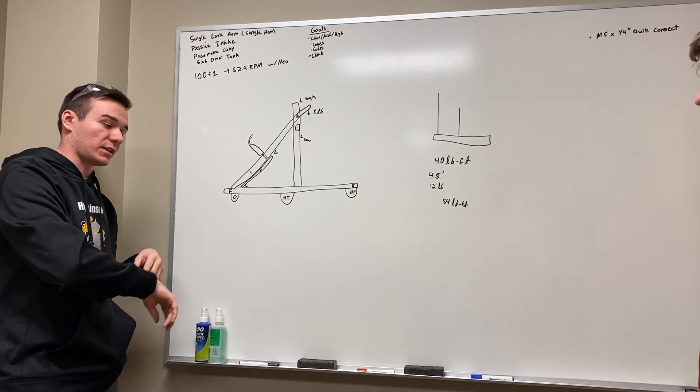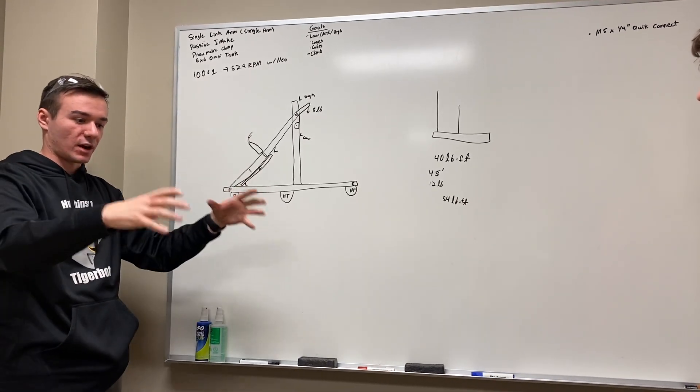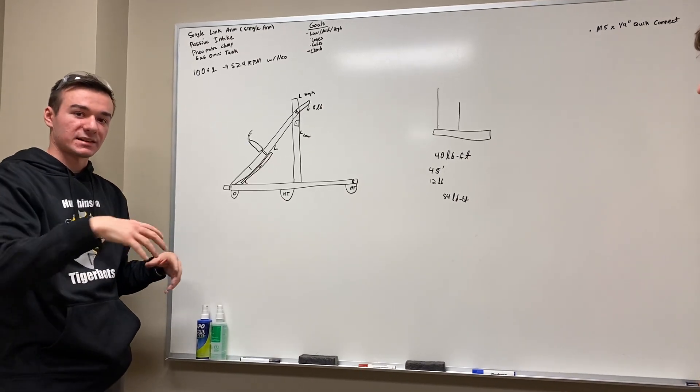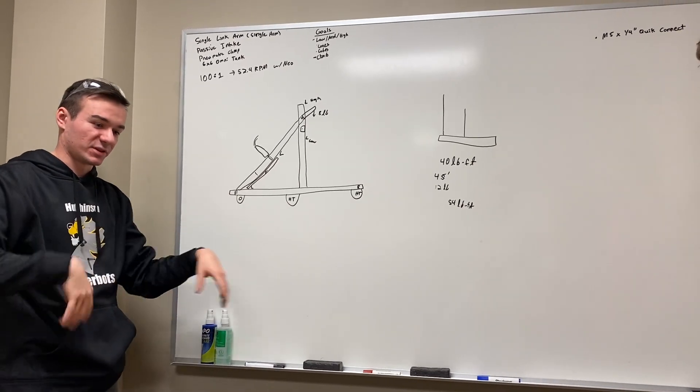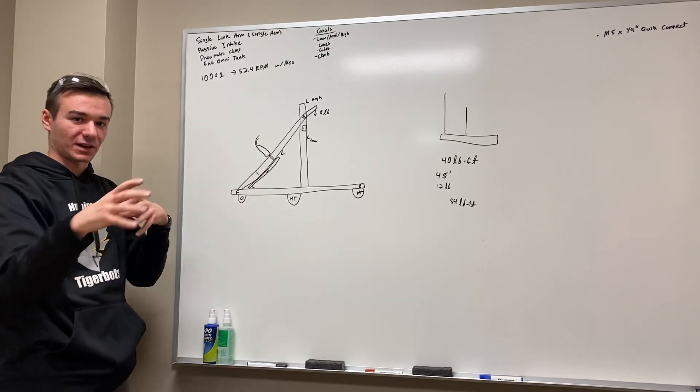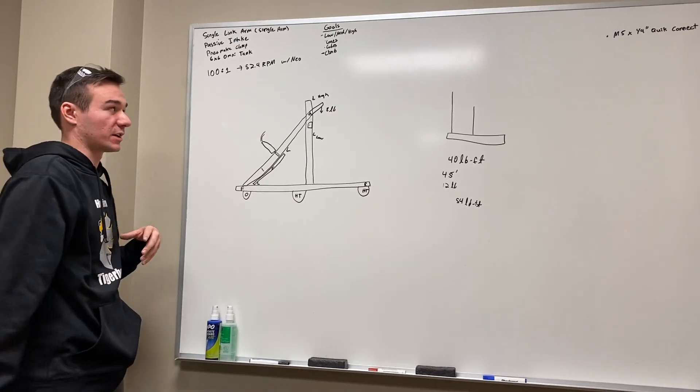If you look at Deep Space, for example, grabbing the balls, or Power Up from 2018 grabbing the cubes which are kind of awkwardly shaped, the cubes this year are much more round, so they're going to flow into the robot a lot easier by comparison.